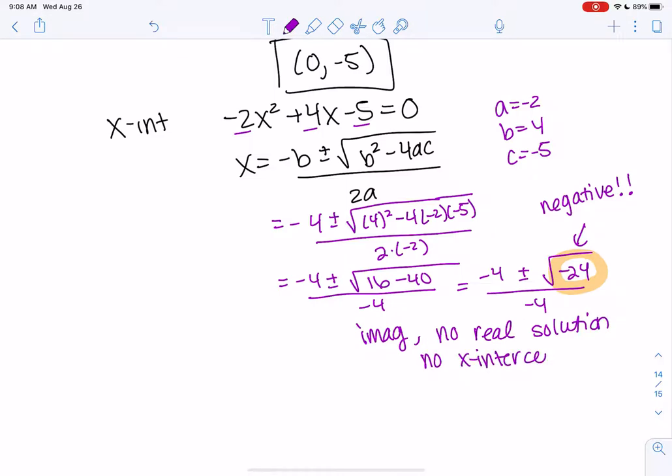Imaginary means no real solution, so no x-intercepts. So we don't need to solve this anymore.